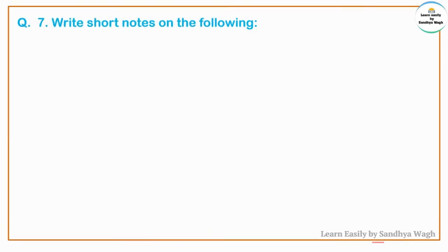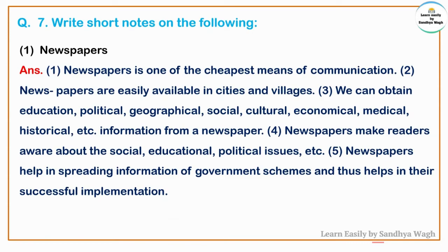Question 7: Write short notes on the following. Newspapers. Newspaper is one of the cheapest means of communication. Newspapers are easily available in cities and villages. We can obtain education, political, geographical, social, cultural, economical, medical, historical, etc. information from a newspaper. Newspapers make readers aware about social, educational, and political issues. Newspapers help in spreading information about government schemes and thus help in their successful implementation.